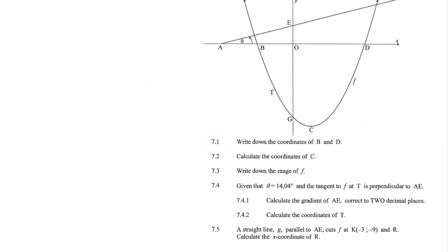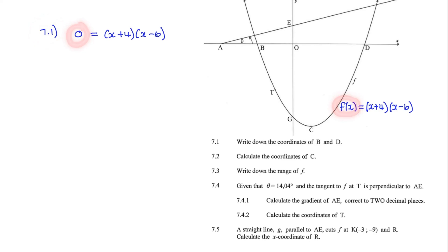Question 7.1: Write down the coordinates of B and D. We know that the equation of f is x plus 4 times x minus 6, and the coordinates of B and D are the x-intercepts, where the y values are equal to zero. We replace f(x) with zero. You don't need to multiply out — simply set each bracket equal to zero. Therefore the coordinates of B are negative 4 and 0, and the coordinates of D are 6 and 0.